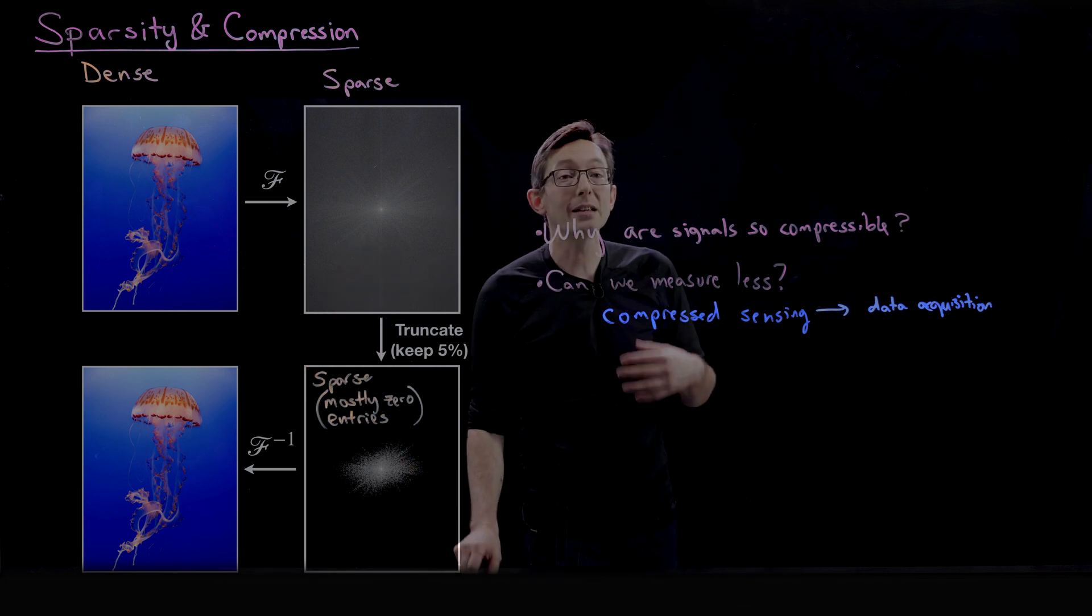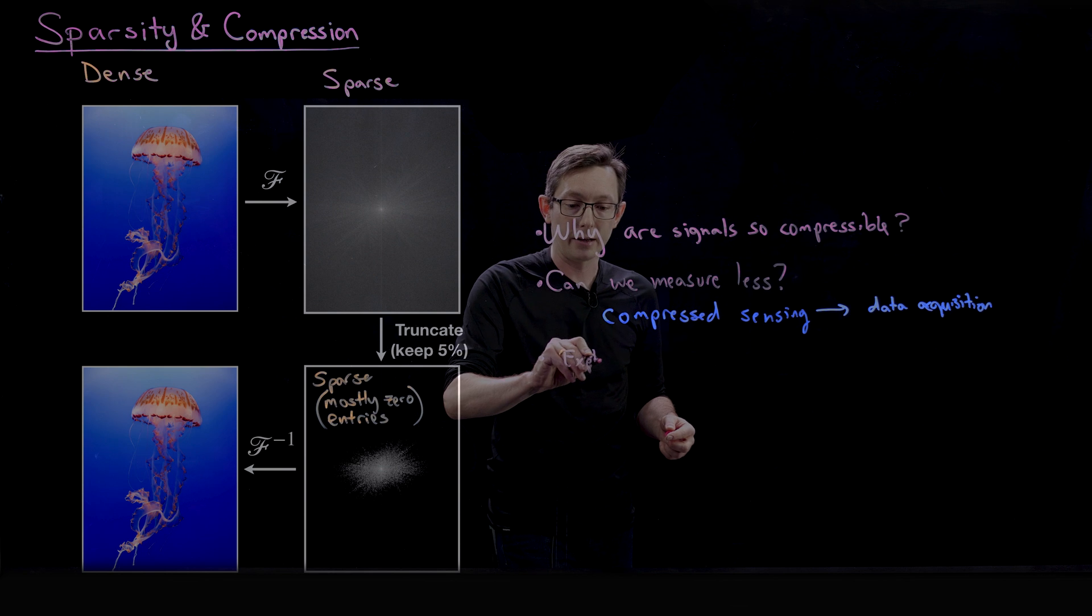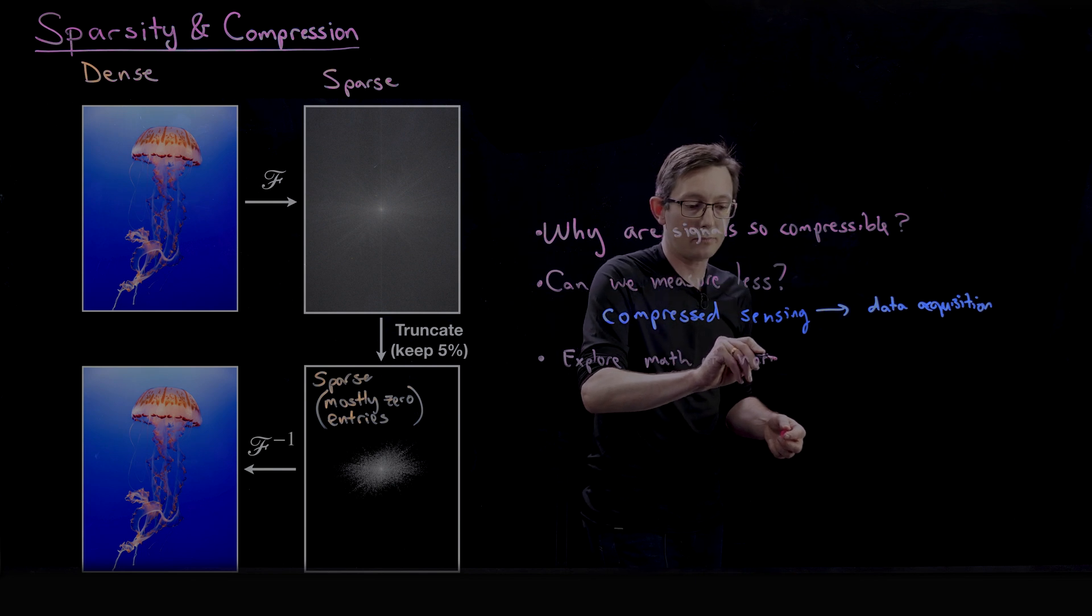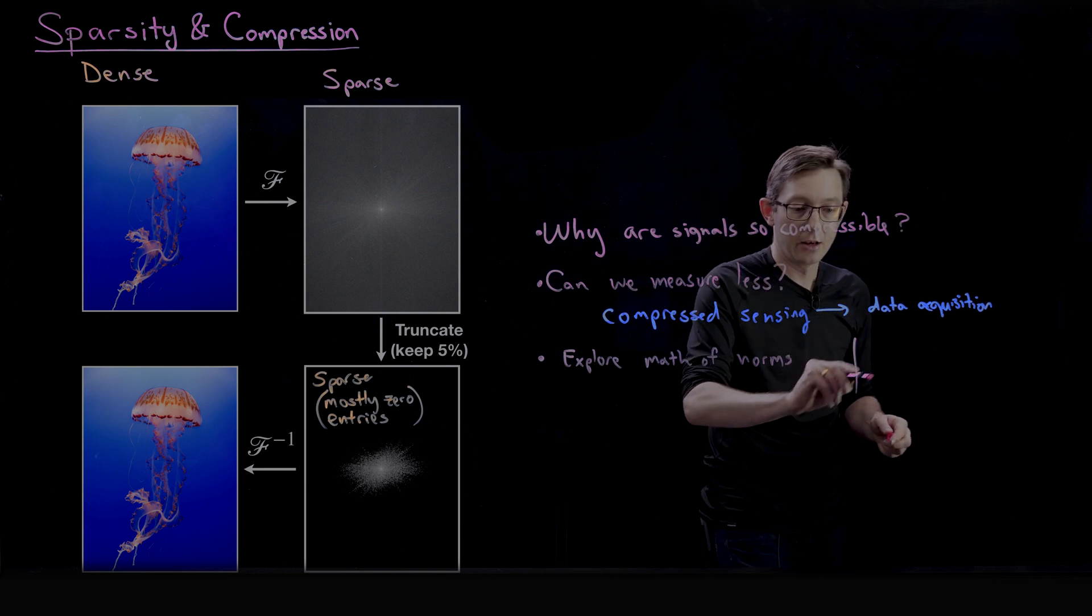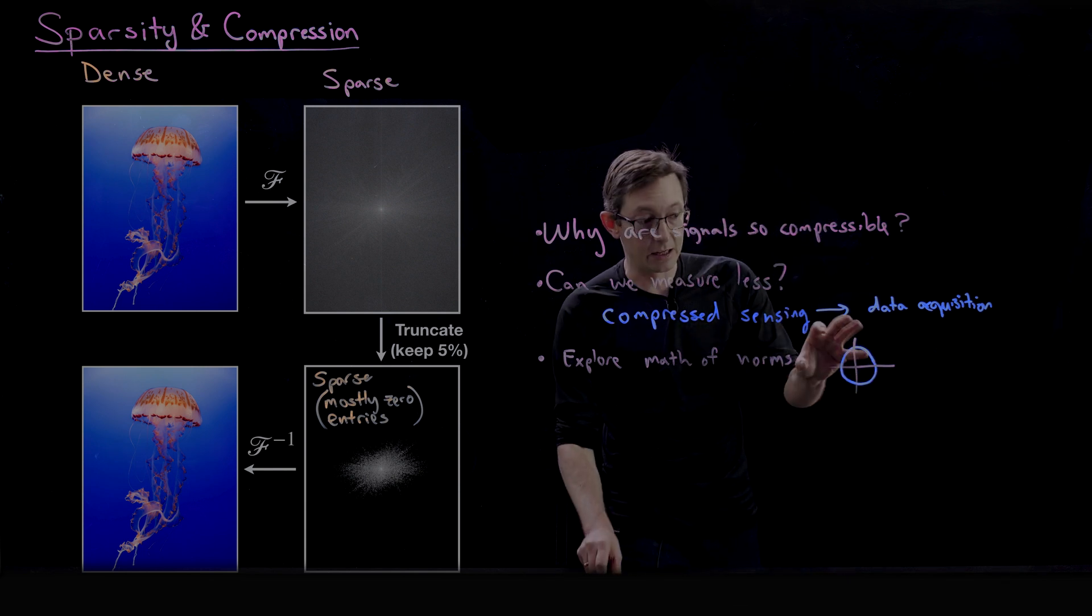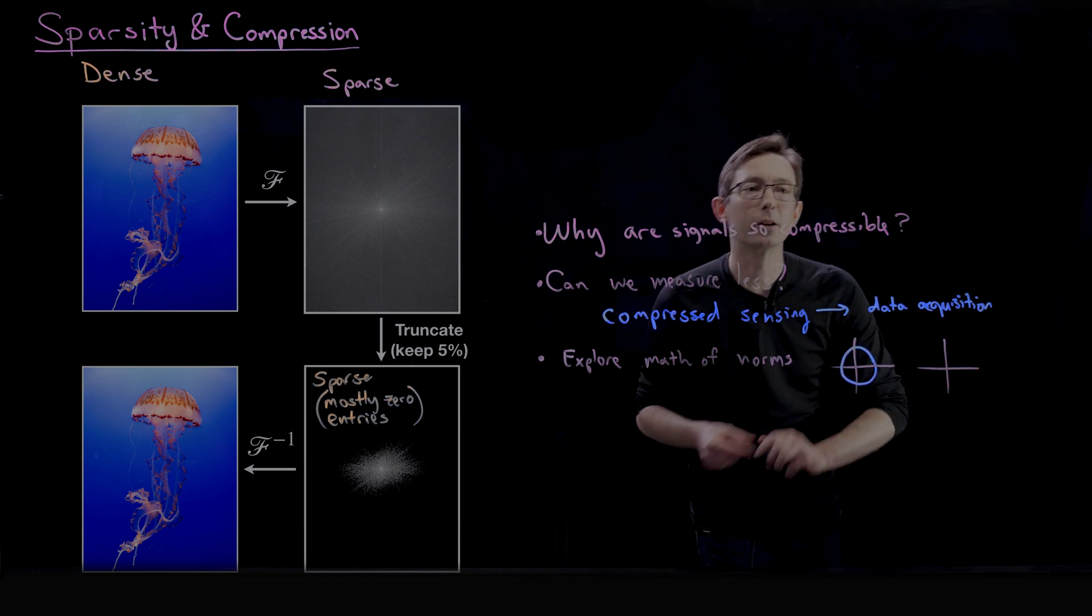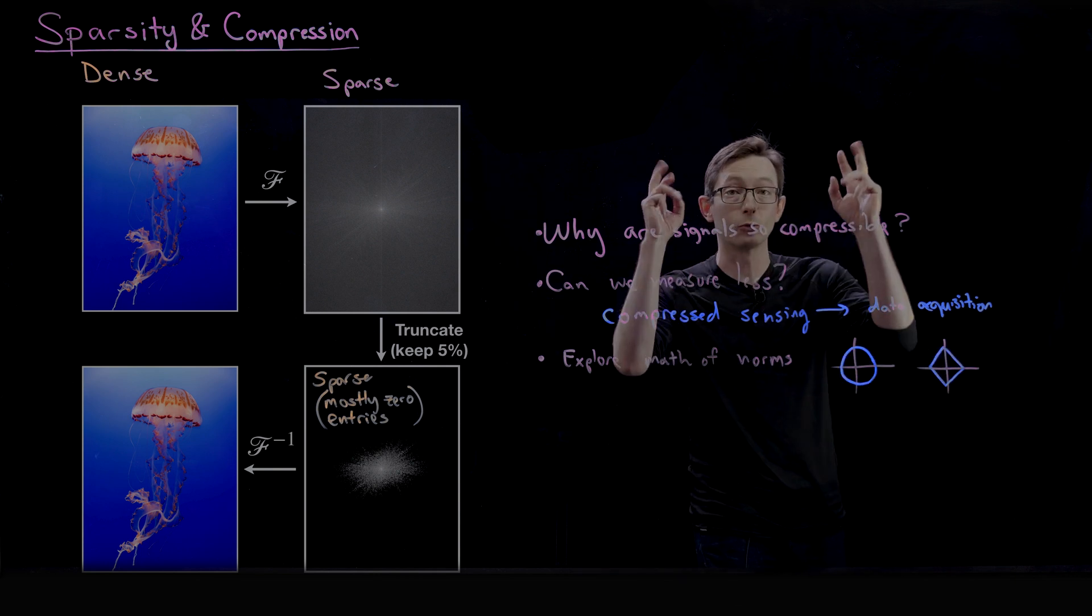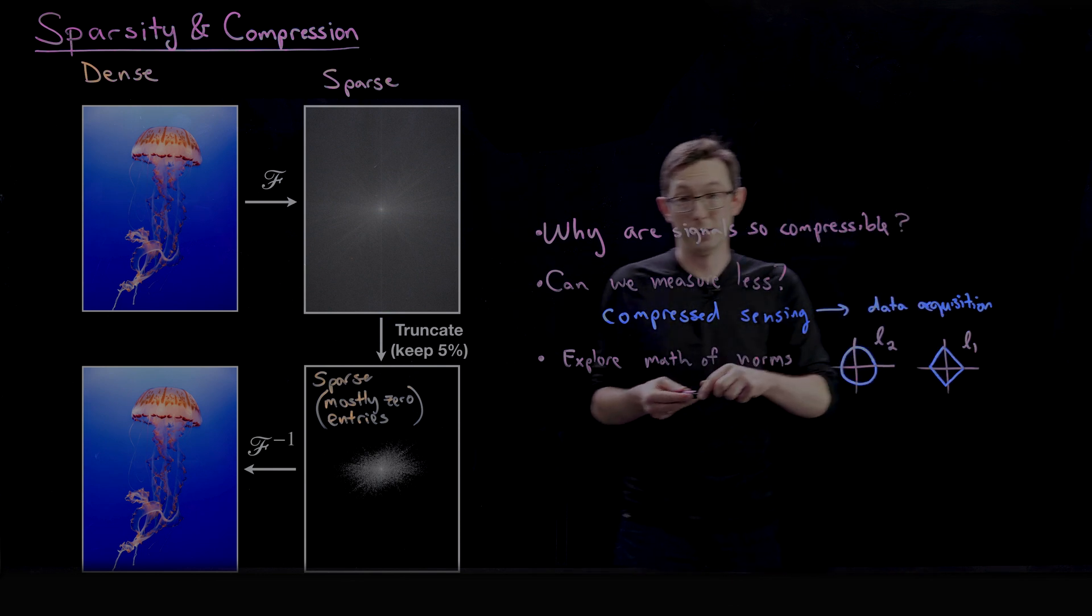We're going to talk about some fundamental mathematical concepts like the L1 and the L2 norms. So we're going to explore the math of norms. In particular, we're going to look at the L1 and L2 norms. You're used to the L2 norm, which is given by these circles of equal radius. But the L1 norm looks like diamonds.